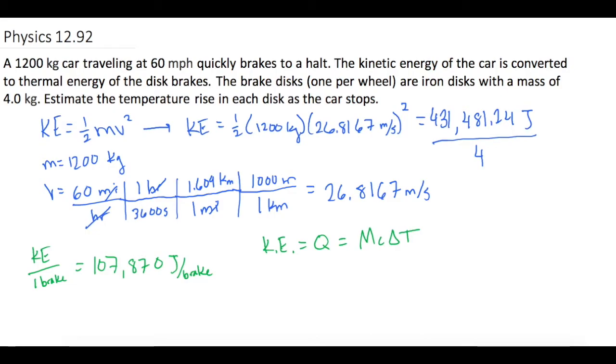They tell us that the mass of the brake is 4 kilograms. If we look up on the constants page, we find that the specific heat or c for iron is 449.